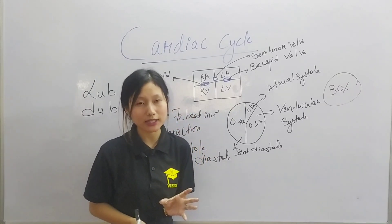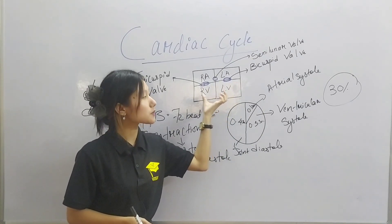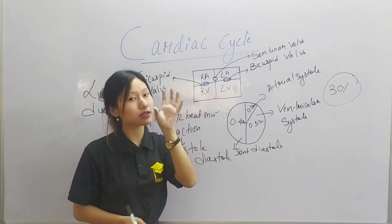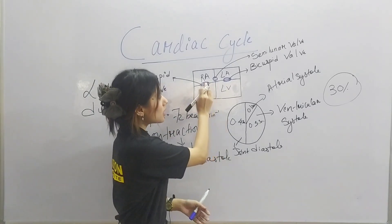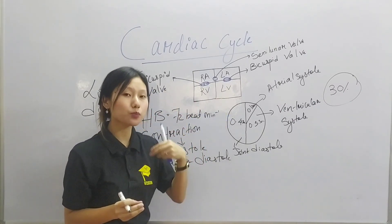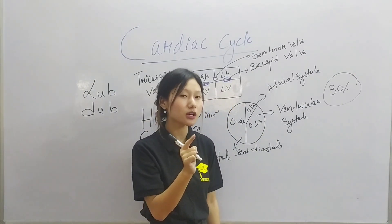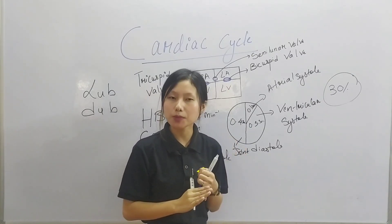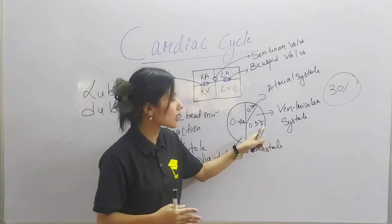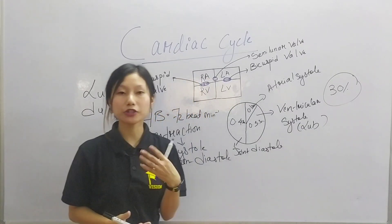Right after the atria contract and blood flows into the ventricles, it leads to the contraction of the ventricles. When the ventricles contract, the AV valves close. When the AV valves — the tricuspid valve and bicuspid valve — close during ventricular contraction, it produces the first sound, which we call lub. So the first heart sound, lub, is produced when the AV valves close during ventricular systole.